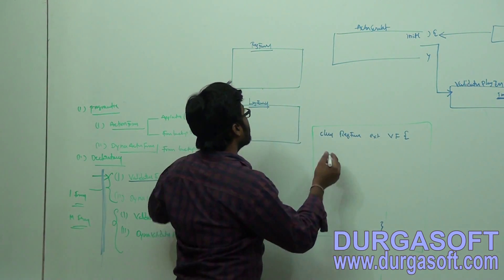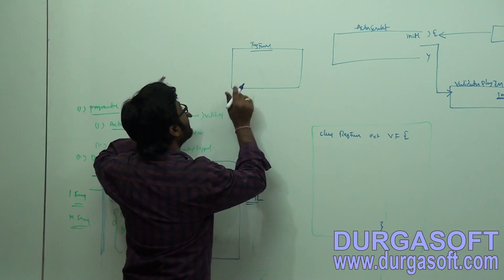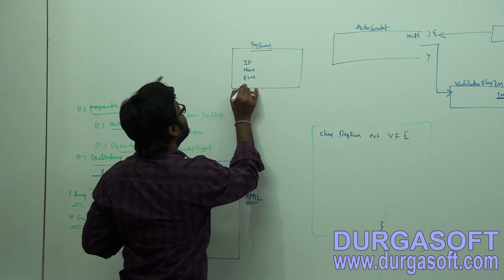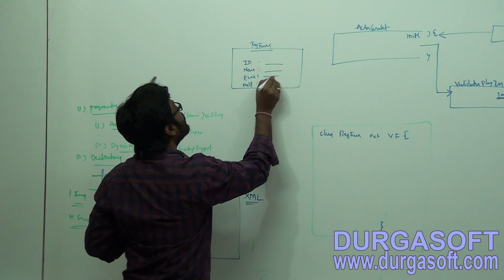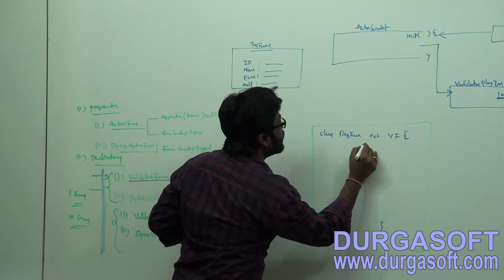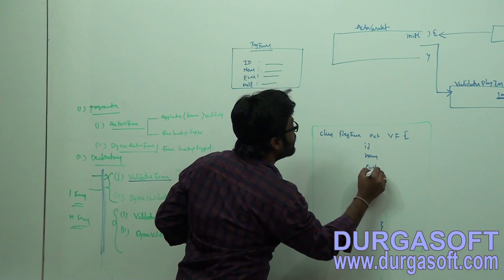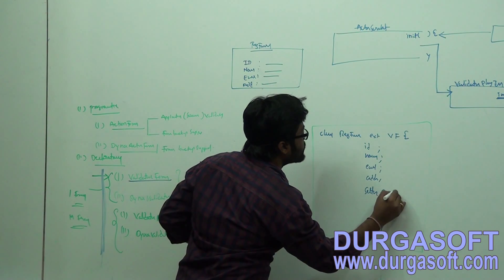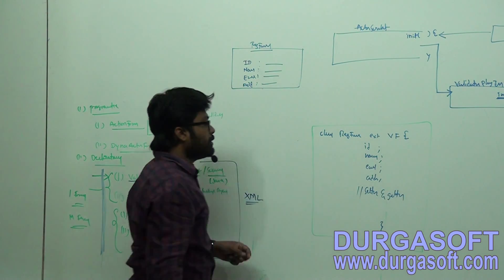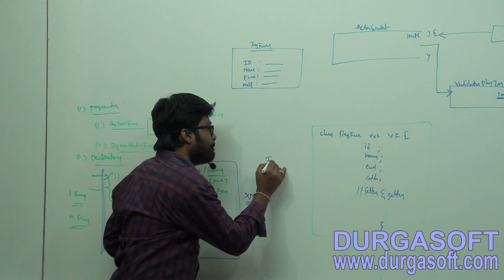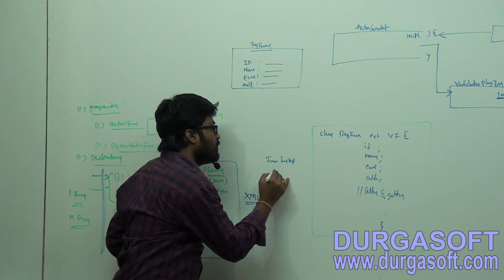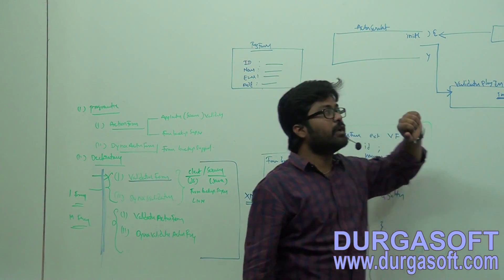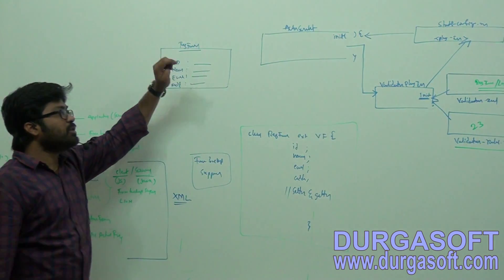Bean declarations: if your registration form contains fields like id, name, email, address — these form properties you need to declare in your bean class along with their respective setters and getters. This bean is only for form backup support. Validations will be executed using the validation XML file data.